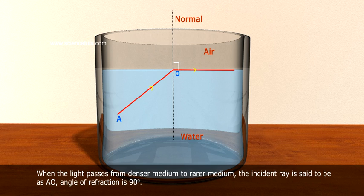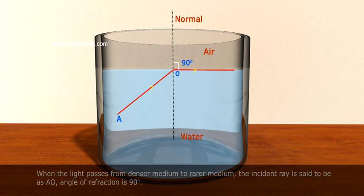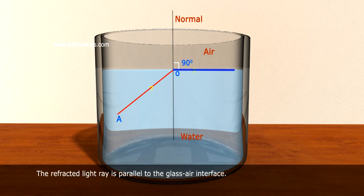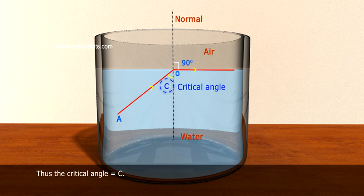Angle of refraction is 90 degrees. The refracted light ray is parallel to the glass-air interface. Thus, the critical angle is equal to C.